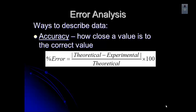To find the experimental value, that's what you do in the lab. To find the theoretical value, sometimes that will be in your reference table or it will be given to you. That's how we compare to tell how close something is to what it should be or what we expected.